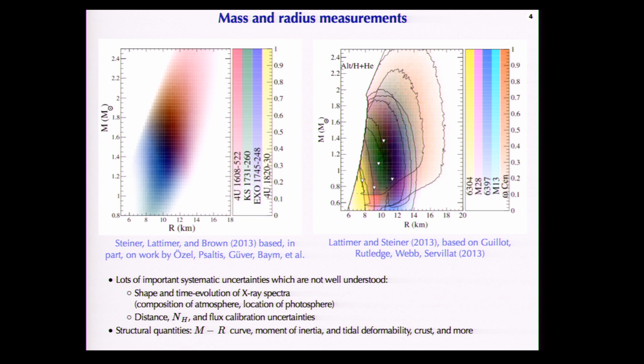There are a lot of systematics I won't have time to explain — for example, distance measurements. Every uncertainty in the distance is directly proportional to uncertainty in the neutron star radius, and there are a lot of systematics in these distance measurements. Also the shape and time evolution of the X-ray spectra are important, as is the hydrogen column density. In addition to masses and radii, there are other structural quantities about neutron stars which are interesting: the moment of inertia, the tidal deformability, and the nature of the neutron star crust.